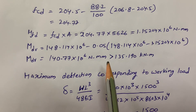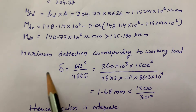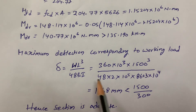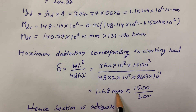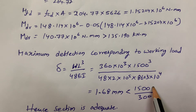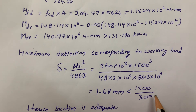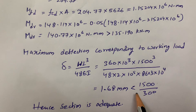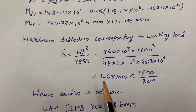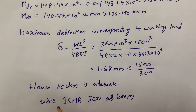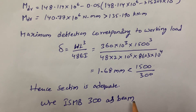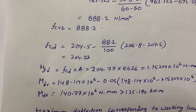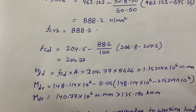Finally, I calculate deflection using δ = WL³/(48EI), and I got δ = 1.68 mm. The code specifies that deflection must be less than span/300 = 1500/300 = 5 mm. Since 1.68 mm < 5 mm, the deflection is within limits. Hence the section is adequate and we provide ISMB 300 as the beam for this design in steel structures.